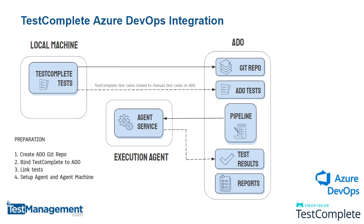We've completed the preparation part of this build. The next stage is to configure the pipeline, and the pipeline will control the execution of the job on the agent, and then be responsible for pulling back the test results into a test run record within Azure DevOps so that we can report on that test run.